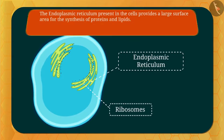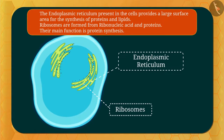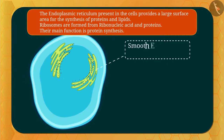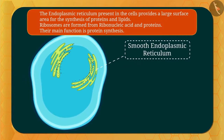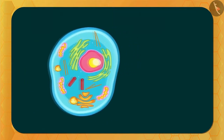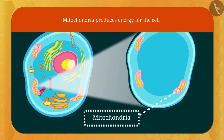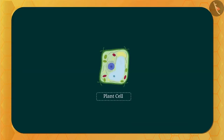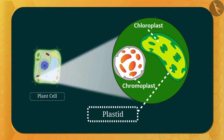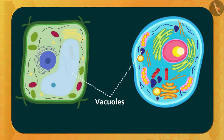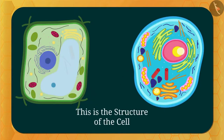Let's see the organelles. This is the endoplasmic reticulum. The black dots on the side of the endoplasmic reticulum are called ribosomes — those with ribosomes are called rough endoplasmic reticulum, and those without ribosomes are called smooth endoplasmic reticulum. After this, this is the Golgi apparatus, this is called the lysosome, and this is called mitochondria. This is the plastid, which is found only in plant cells. And these are vacuoles, which are very large in plant cells and very small in animal cells.